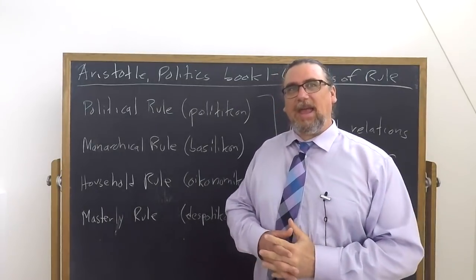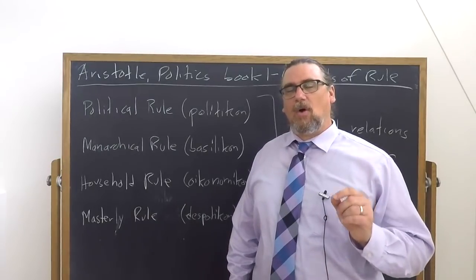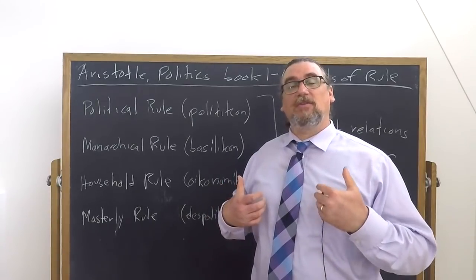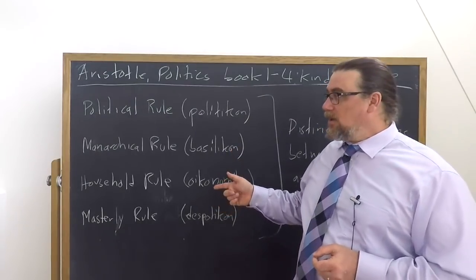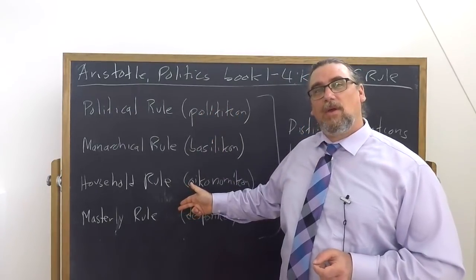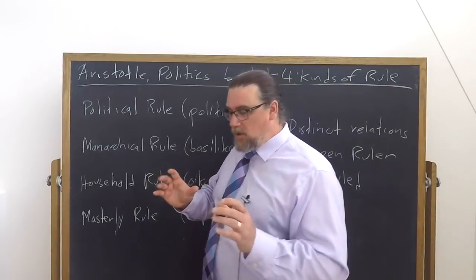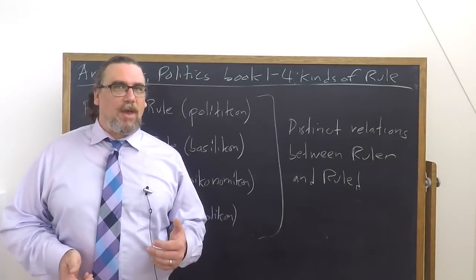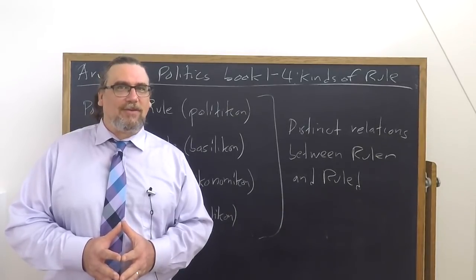So each of these would have its own demands and its own way of structuring power and relations and what people can expect in the framework of these. In political rule, you can expect a lot more than you can in despotic rule. Likewise, household rule in relation to despotic rule. So it's very important to get this distinction down when going into Aristotle's politics, but it also has some very important implications for Aristotle's ethics as well.